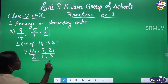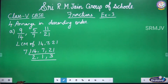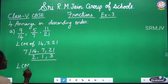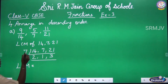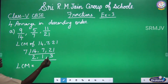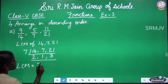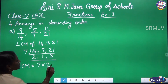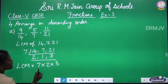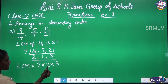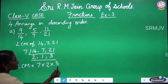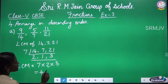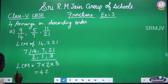Now we got the prime numbers, so we have to stop here. To find the LCM, we have to multiply all the prime numbers: 7 × 2 × 3. So 7 twos are 14, and 14 threes are 42. The LCM is 42.